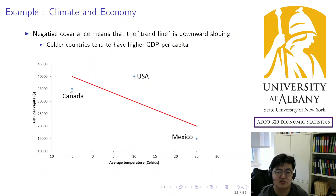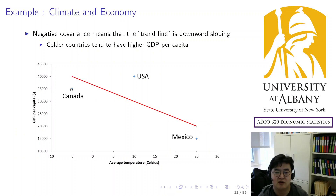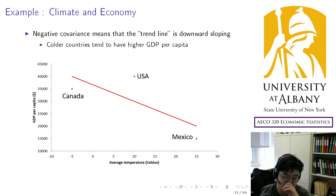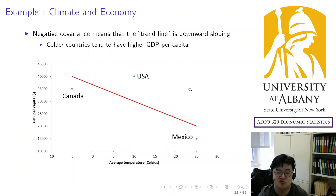Graphically, Canada is here, USA is here, Mexico is here, and the trend line goes like this. Canada is slightly below the trend, USA is slightly above the trend, and Mexico is also below the trend — explaining the negative trend. Calculating the covariance involves a little more algebra than variance, but it's doable.